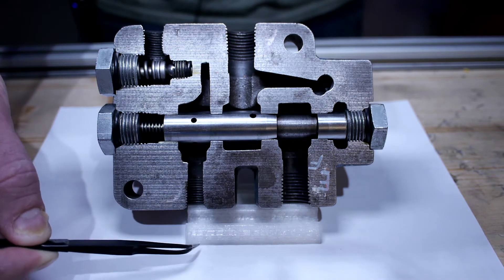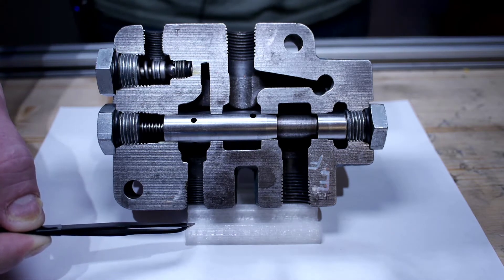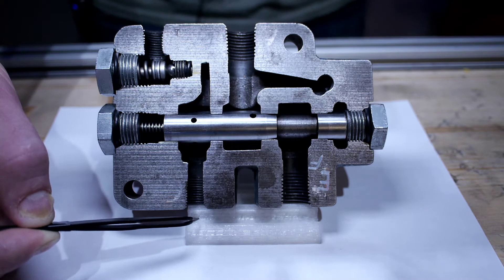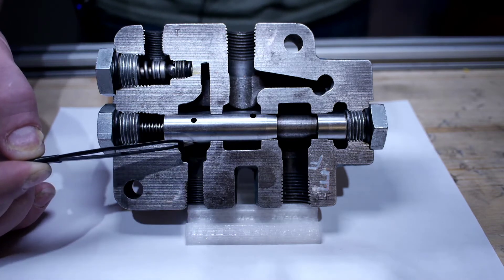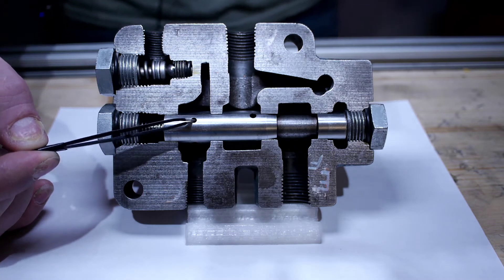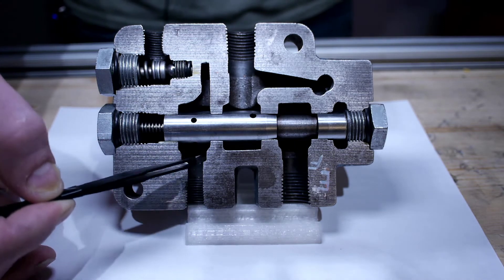The load will build up the pressure as the load does the work—the cylinder, the motor, whatever is happening—it's doing the work, resisting the flow. Pressure is going to build up, it's going to come back into the spool. Just like every compensated flow control, we have to have the load oil from the control port.